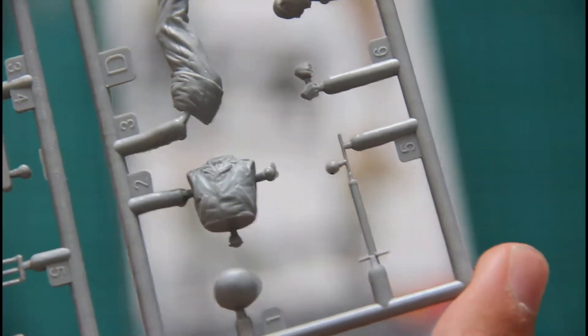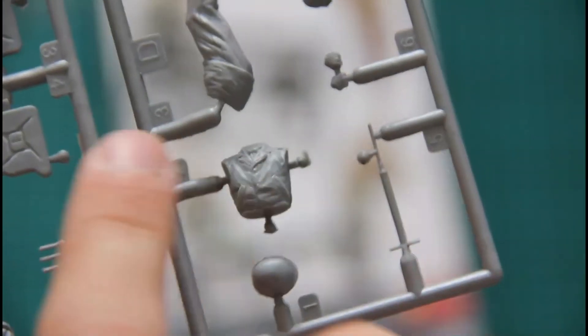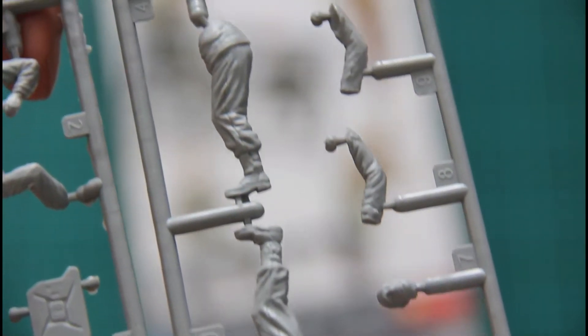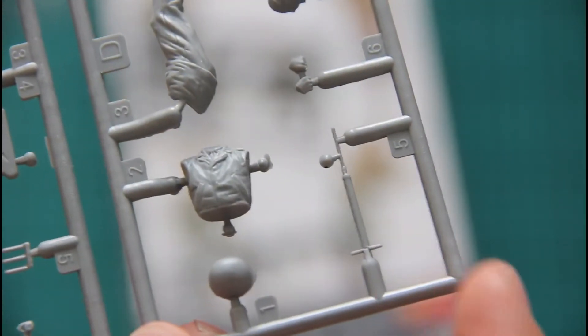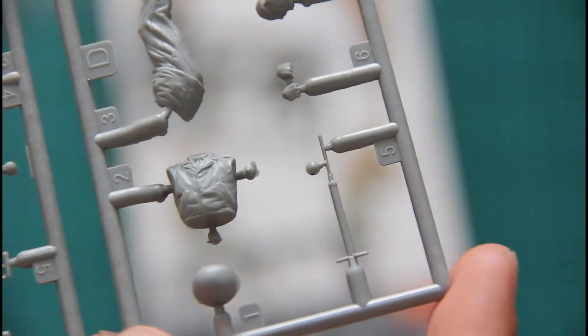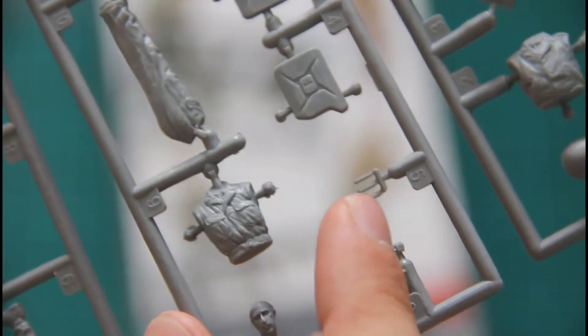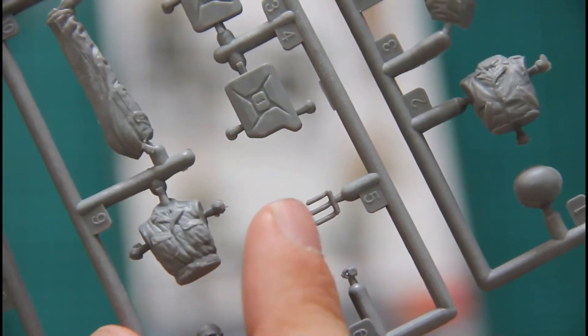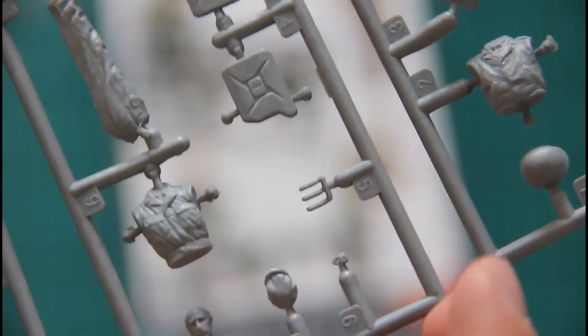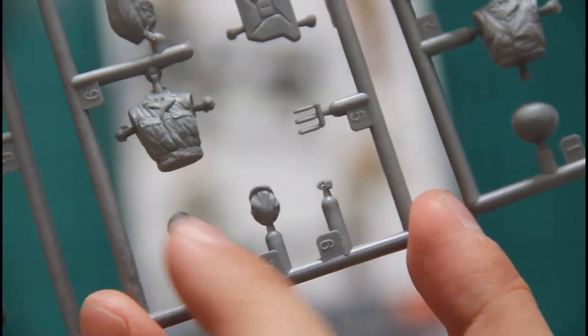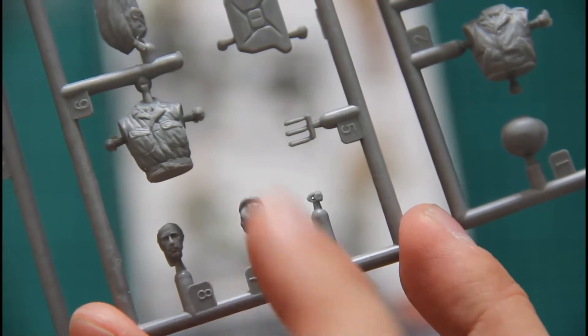So each sprue is dedicated to one figurine obviously, and as you can see, parts division is typical for the figurine kits. So we have separately molded legs, separately molded hands, hats and torsos. Also here you can see the special tools which are molded separately. Here you can see a few canisters which has even handle molded separately for better detailing. And here you can see face of the driver with separately molded head.